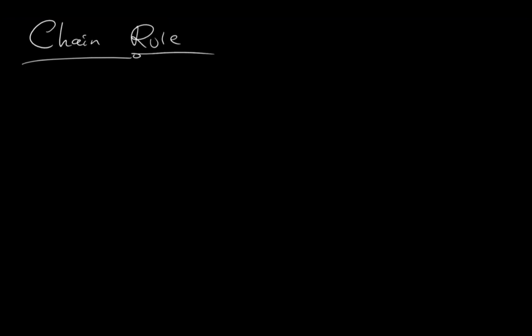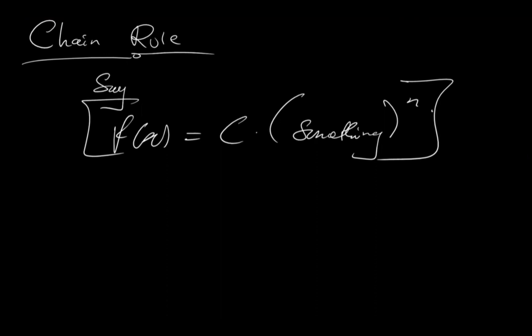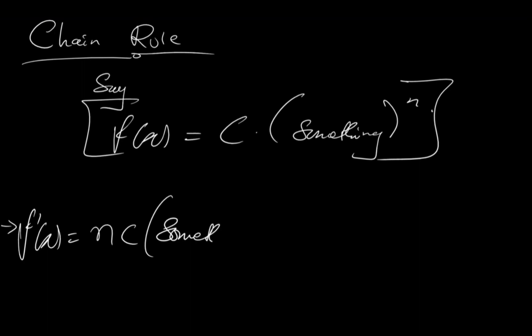So basically, when applying the chain rule, you have to look for functions that look like f being equal to c times something to the n. Now the derivative of such a function, which is f prime of x, is equal to n times c, times something raised to n minus 1, times the derivative of something.